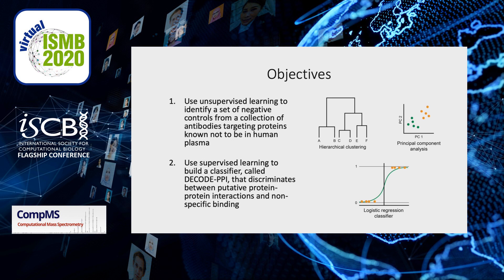We first implement unsupervised learning to identify a set of negative controls from a collection of antibodies targeting proteins known not to be present in human plasma. Following this, we used supervised learning to build a classifier, which we've called Decode PPI, that will perform the classification between true protein-protein interactions and contaminating nonspecific binding.